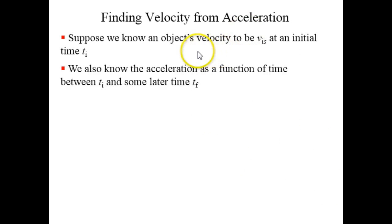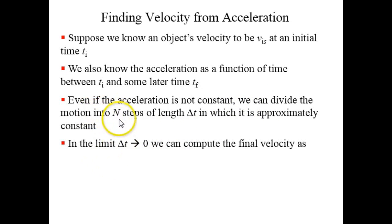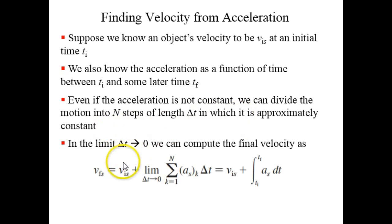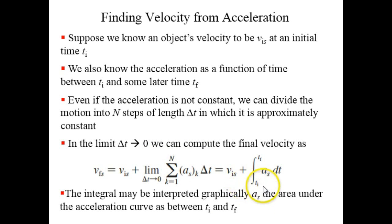If you know the initial velocity and you know the acceleration as a function of time — for example, from having solved the net force — then even if the acceleration is not constant, we can divide the motion into n steps of length delta-t in which it is approximately constant and find the final velocity as the sum of acceleration times delta-t. The final velocity is the initial velocity plus the sum of all these changes, which can be written as an integral: the final velocity equals the initial velocity plus the integral from the initial to the final time of the acceleration over time dt.